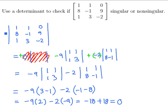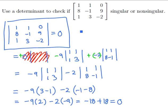So, we find that our original determinant is equal to 0. And that means that this matrix must be singular. It cannot have an inverse if it has a 0 determinant.